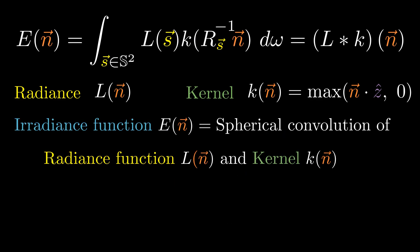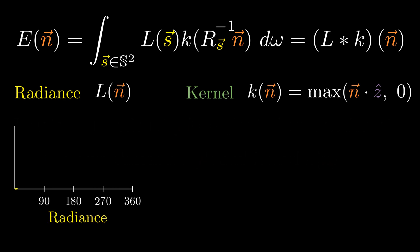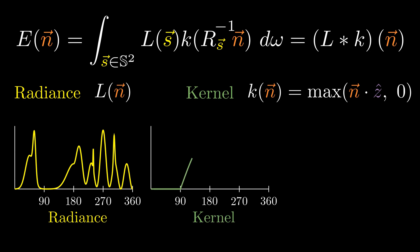For example, let's start with a one-dimensional radiance function L defined over incoming rays. This function can be quite complex, affected by occlusions, shadows, and reflections from the environment. The kernel K is the cosine of the zenith angle, clipped to be non-negative. It represents how sensitive the panel is to light coming from each direction. By convolving the radiance L with the kernel K, we obtain the irradiance function. The optimal orientation of the panel is the direction that maximizes this irradiance.